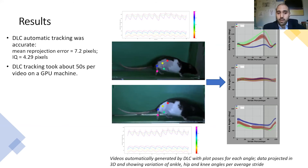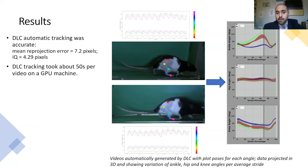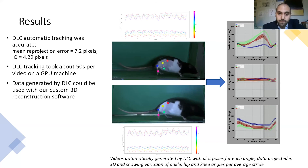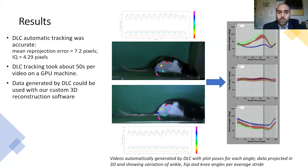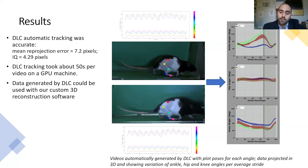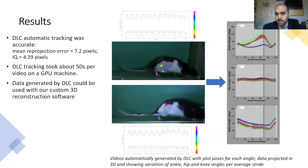This is significantly lower than videos tracked using manual methods or semi-automatic methods, which took on average 50 minutes per video. We also found that data generated by DeepLabCut could be used with our custom 3D reconstruction software. As we can see here on the right, this shows the variation of the 3D computed angles of the ankle, hip, and knee, and we can assess how quickly this recovery happened compared to the blue line, which is the baseline.